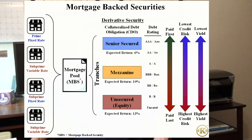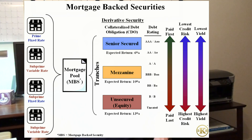Poor underwriting standards and a lack of scrutiny for automated lending gave brokers and borrowers ample opportunity for fraud. The lack of oversight also encouraged homeowners to make poor decisions, borrow too much money, and speculate on housing prices.